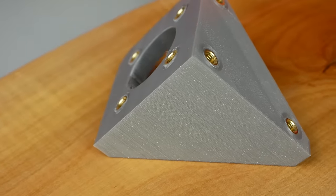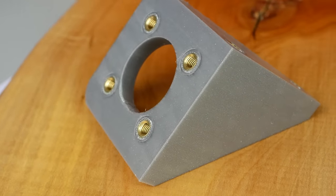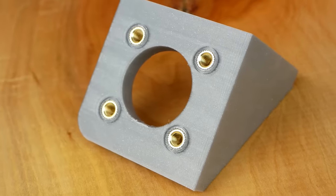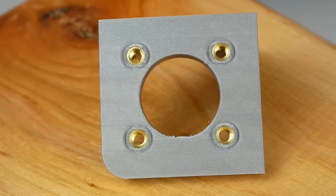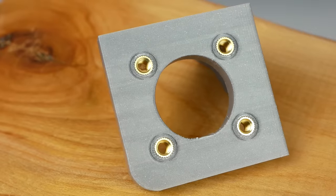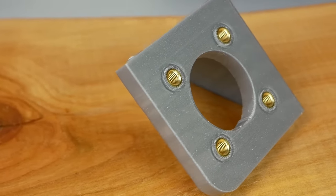I also wanted to share a last trick which might not be something that everybody knows. In order to add strength to the threads it's a good idea to increase the shell thickness of your 3D prints. Unfortunately this might increase the material use and the print time of your parts significantly because the settings are applied globally.